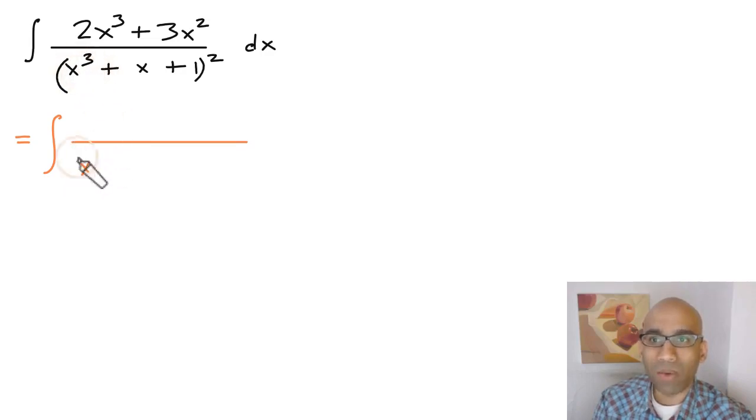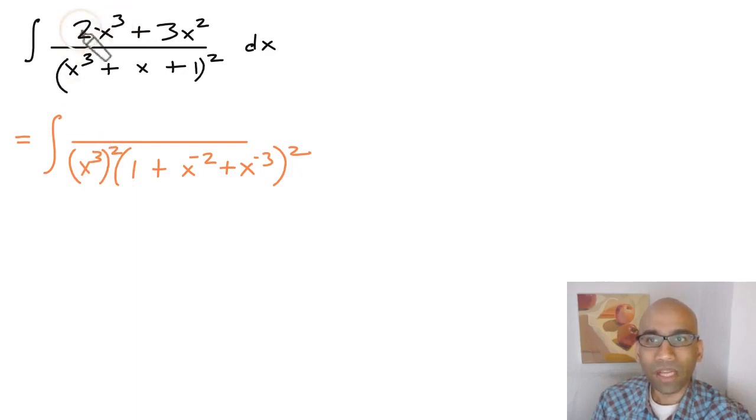So when we bring the x power 3 here we're going to get x power 3 times 1 plus x power minus 2 plus x power minus 3, and we are squaring this. Because we brought the x power 3 outside it's actually going to be a square here, and we're going to copy this down to x power 3 plus 3x power 2 dx.